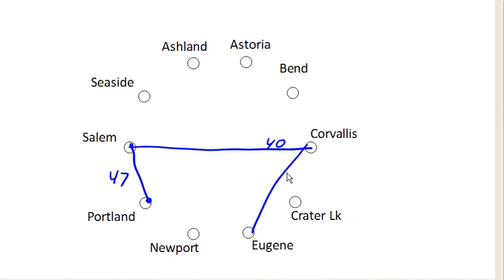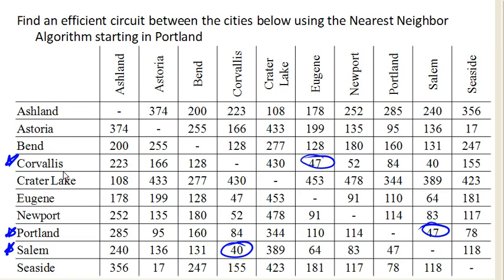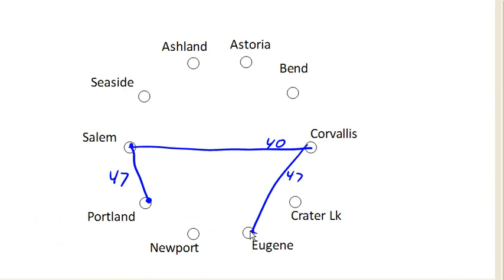So now we are in Eugene. From Eugene, I'd really love to go to Salem — oh wait, we've already been to Salem, so no Salem. I'd really love to go to Newport. Newport is our next cheapest option. So from Eugene, we're going to go to Newport, which was 91 miles away.